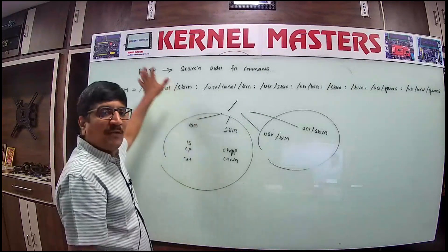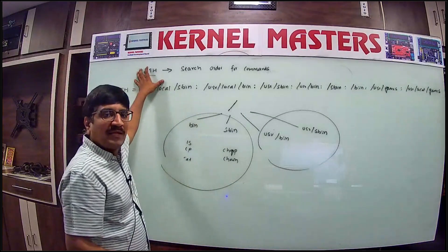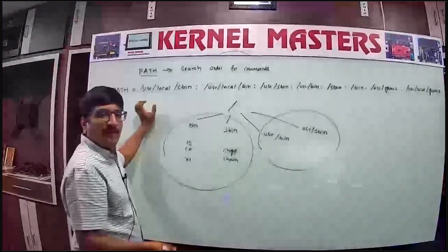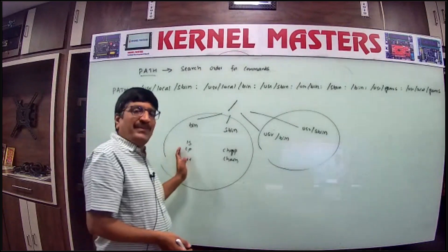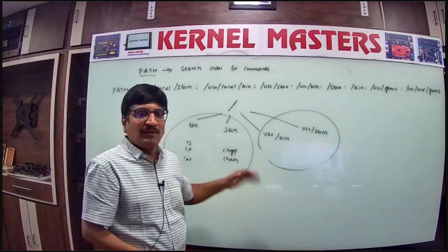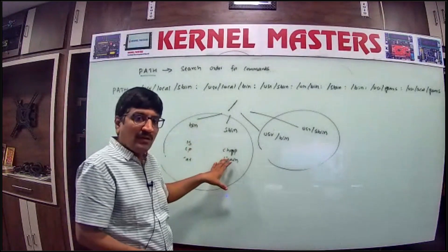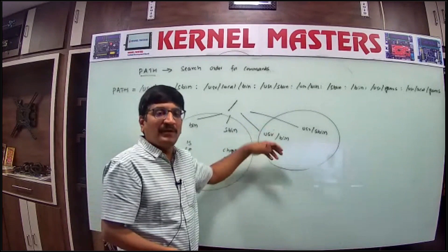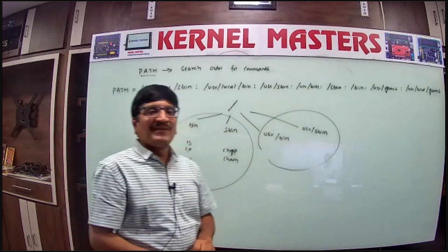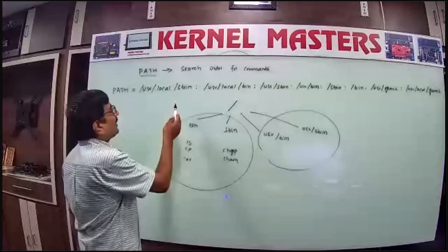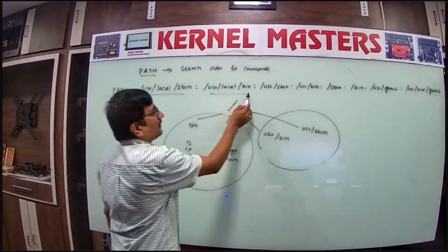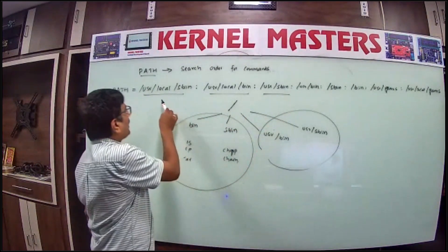The PATH environment variable defines the search order for commands. Commands can be located in different places in your system — bin, sbin, or other locations. We need to set the path covering all these locations so the system can find commands in bin, sbin, user/bin, or other folders. The search order goes first location, second, third, and so on.